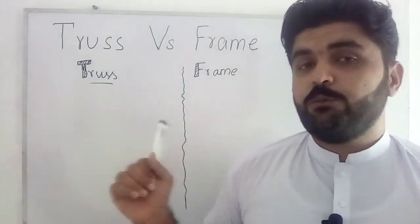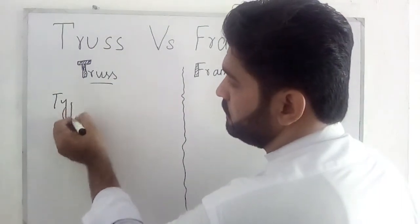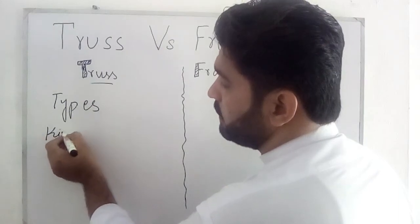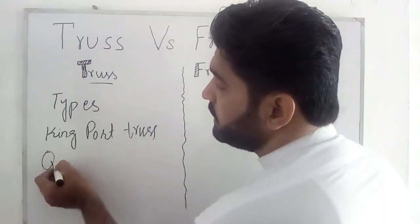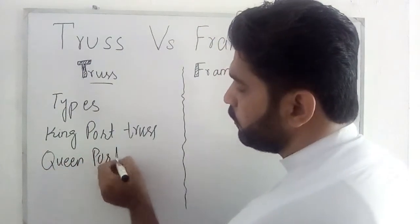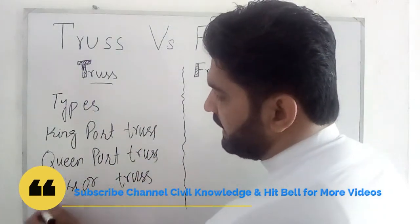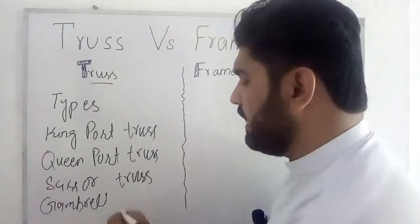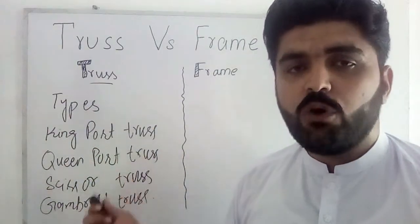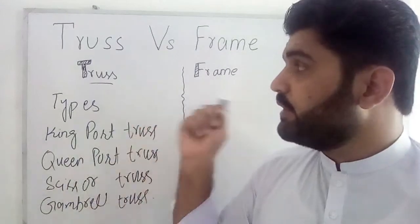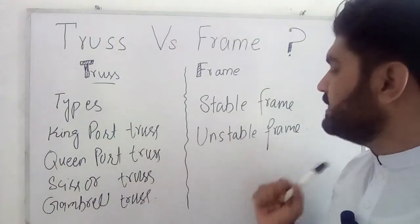The fourth difference between the truss and frame is regarding their types. The types of truss include king post truss, queen post truss, and many others. I am focusing on the difference between truss and frame so I have listed the main types. The different types of frame are stable frame and unstable frame. So this is the fourth difference between the truss and frame.